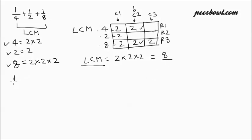Now we need to convert these fractions, 1 by 4, 1 by 2 and 1 by 8, in such a way that their denominators come to 8. Let us see how to do that. We need to make denominators 8 of all three fractions.